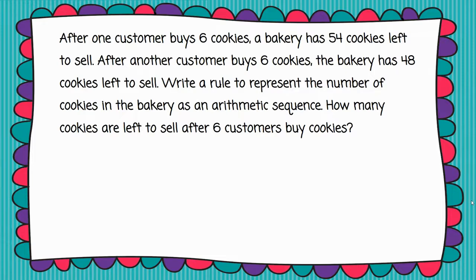We want to write a rule to represent the number of cookies in the bakery. That's very important - we are not writing a rule for how many cookies were sold. We want to write a rule to represent the number of cookies the bakery has left, and then we want to know how many cookies are left to sell after six customers buy cookies.